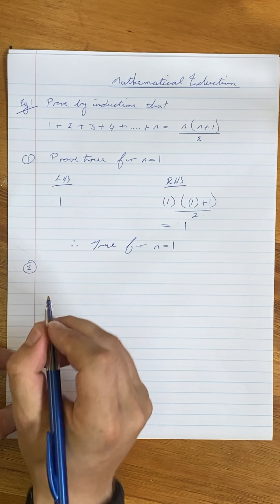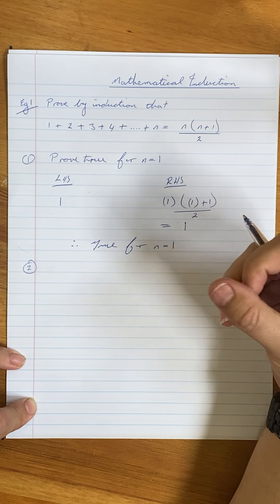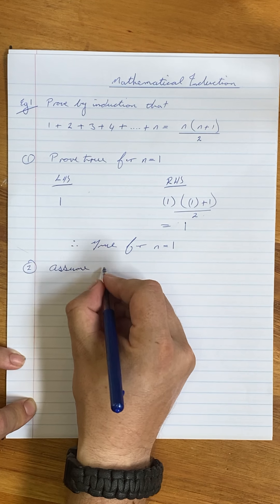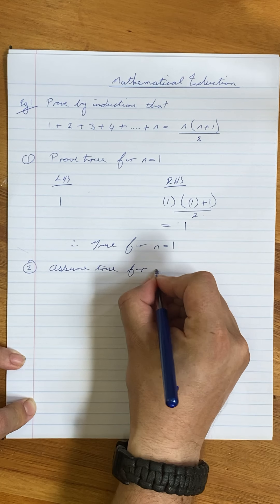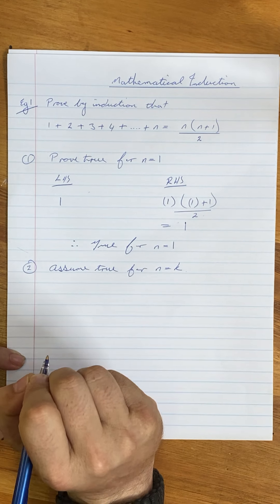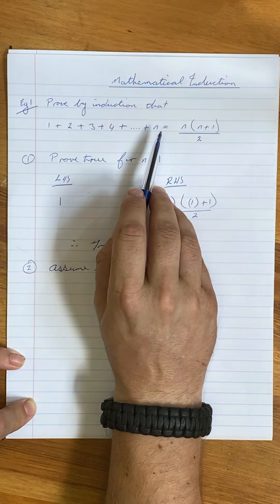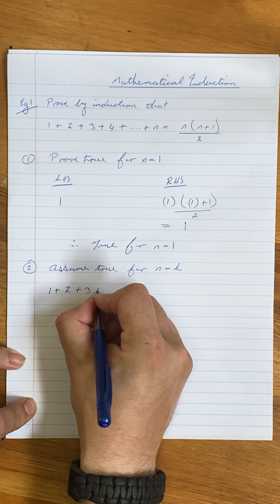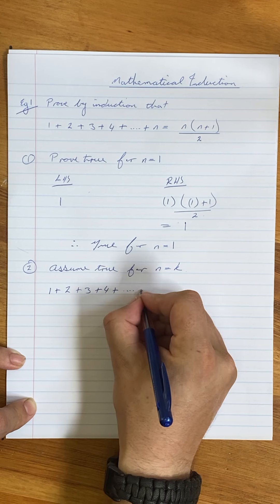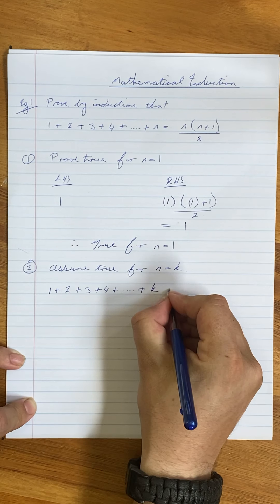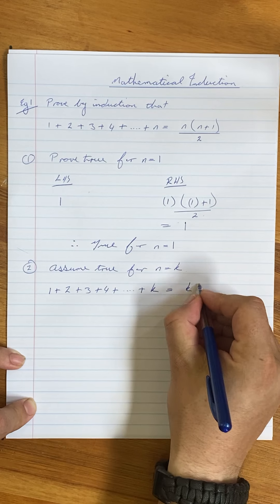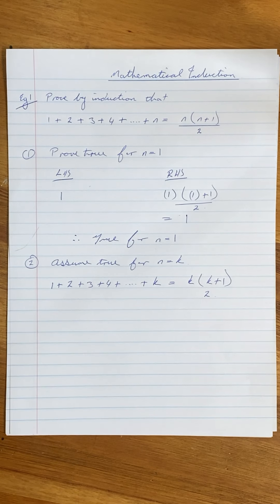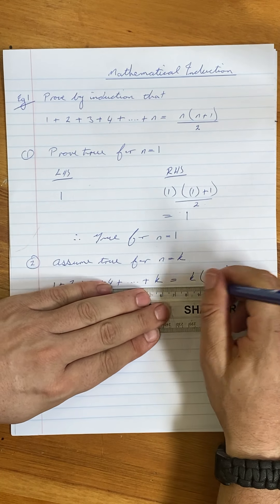Now the next step is we're going to use an assumption — I'm just going to introduce another variable. What we're going to do now is we're going to assume true for n is equal to k. In other words, I'm just going to change the n to a k. So we're going to get 1 plus 2 plus 3 plus 4 plus k equals k times k plus 1 all over 2. That is an assumption that it holds true for some variable k.